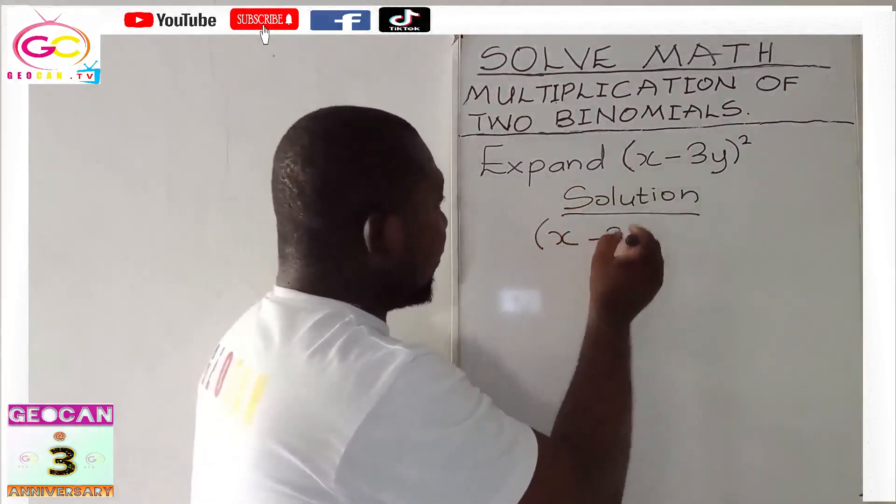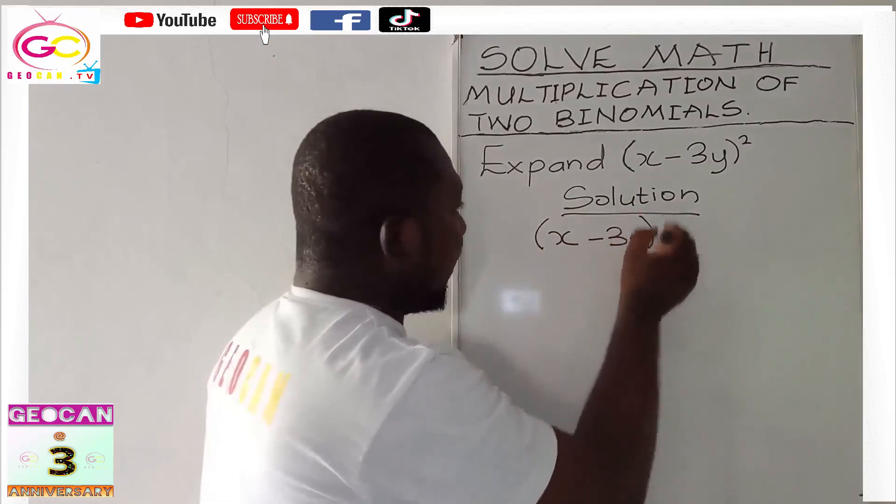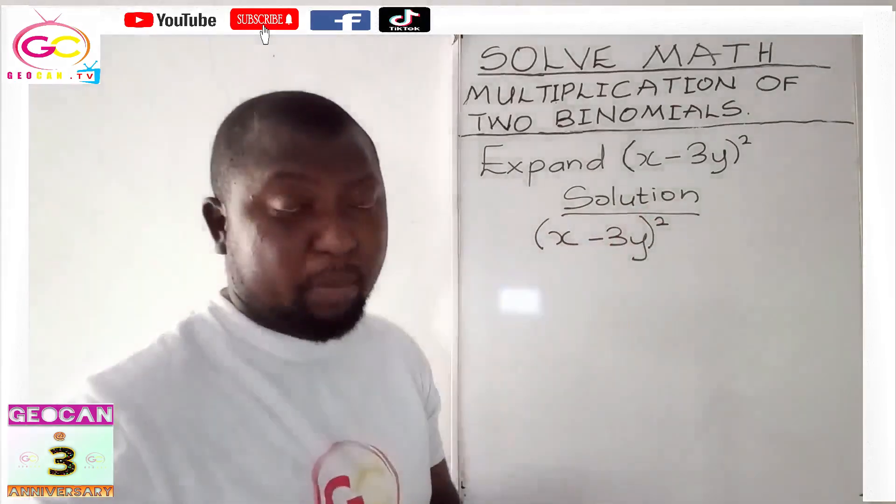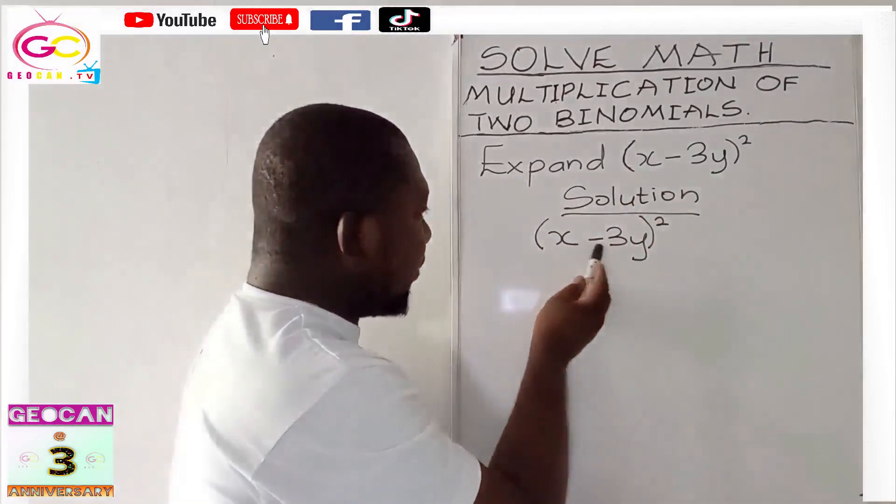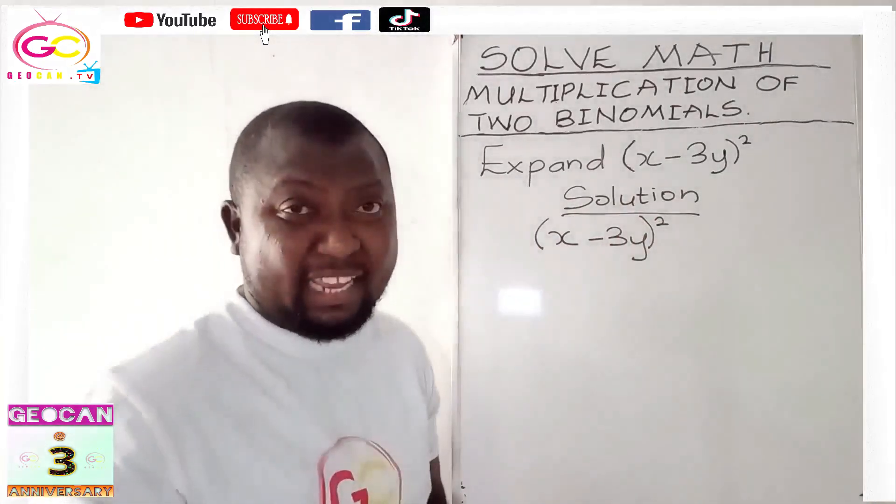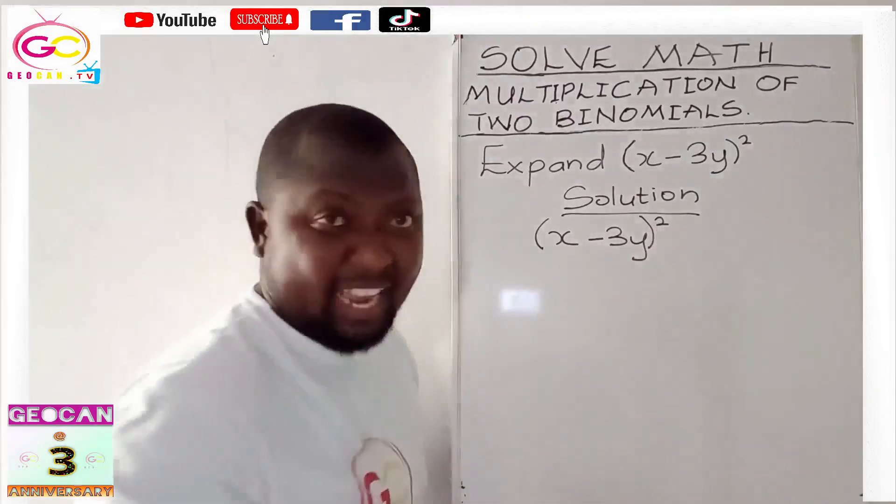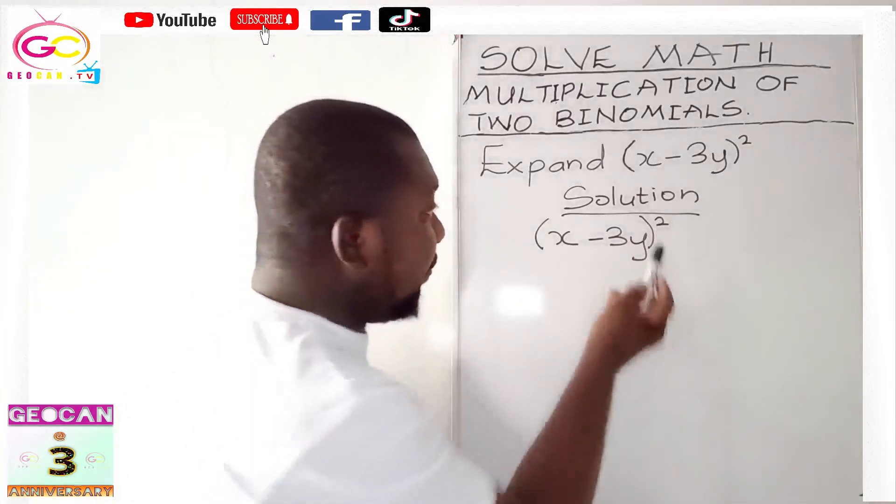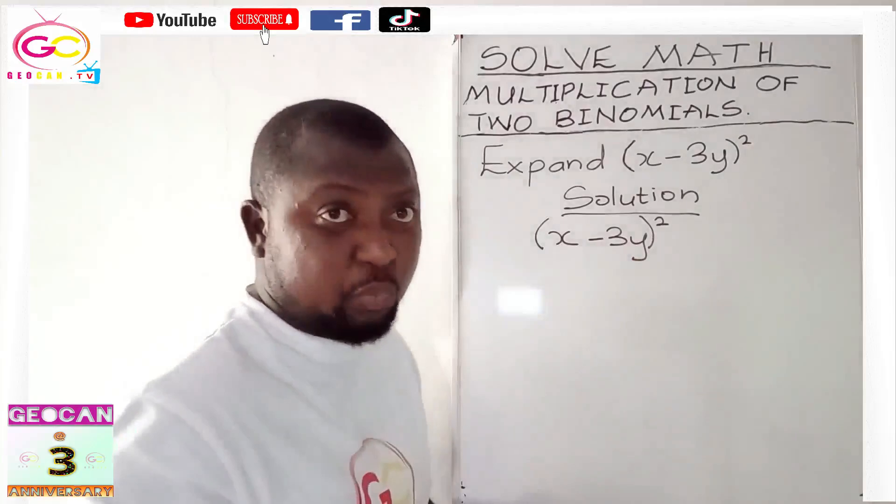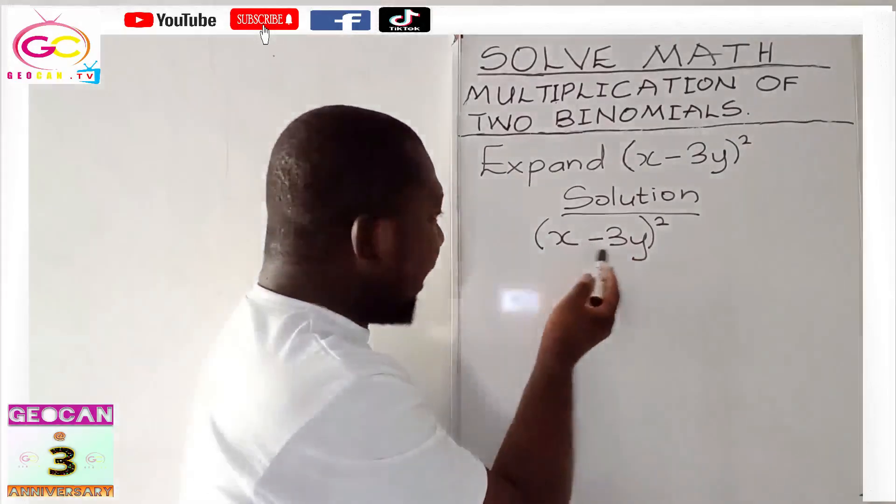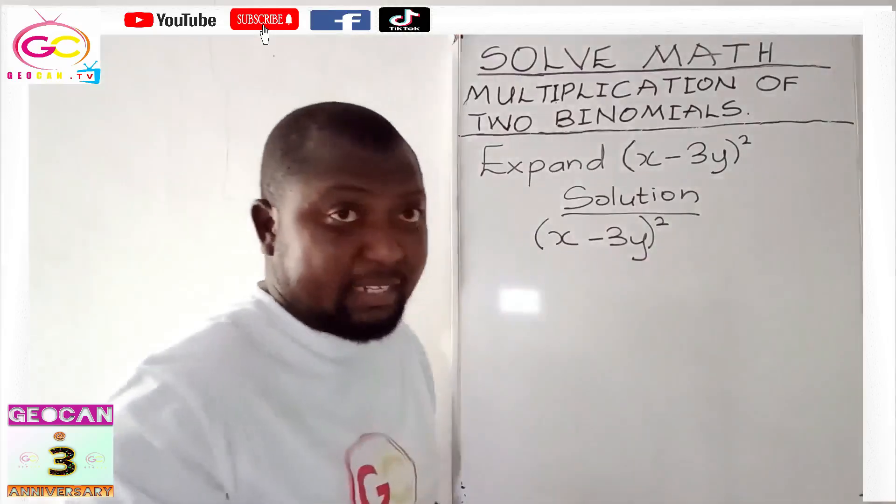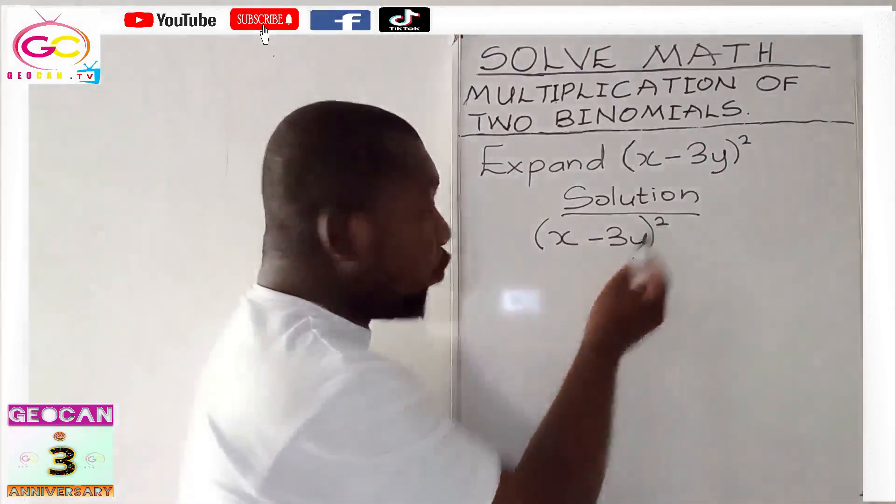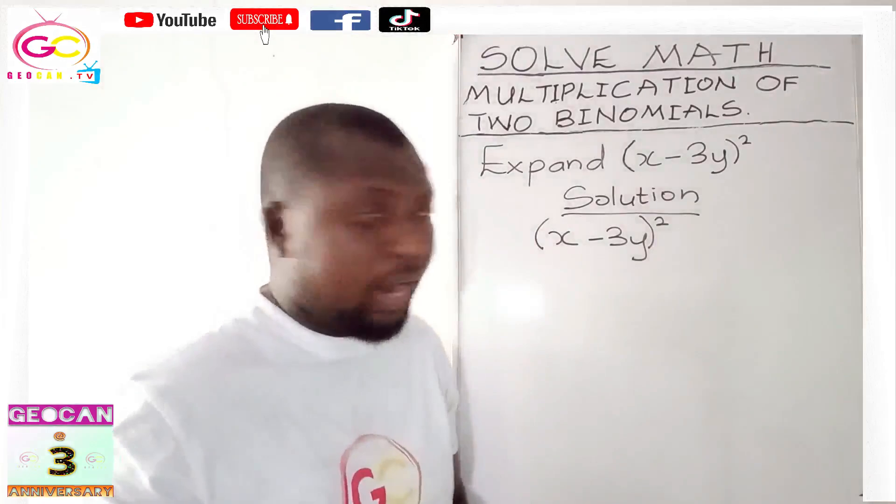Now, to bracket x minus 3y bracket close, raised to the power 2. It simply means that x minus 3y is multiplying itself twice. If this were to be 3, it would have meant that x minus 3y will be multiplying itself three times. But in this context, it is 2, so it is multiplying itself twice.